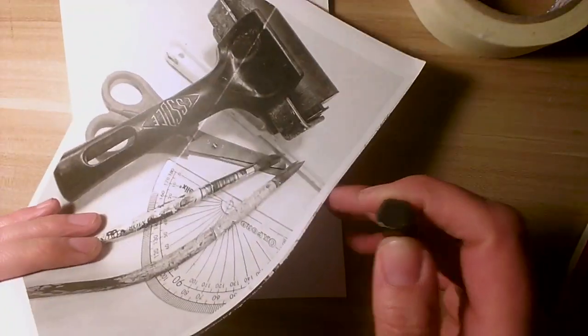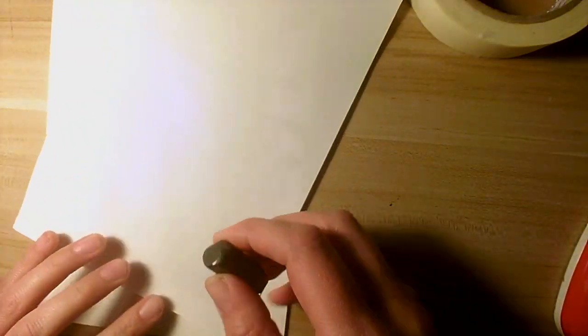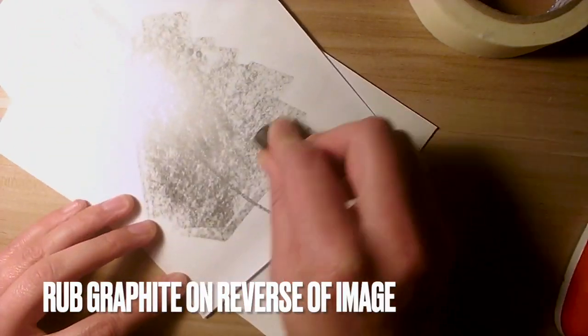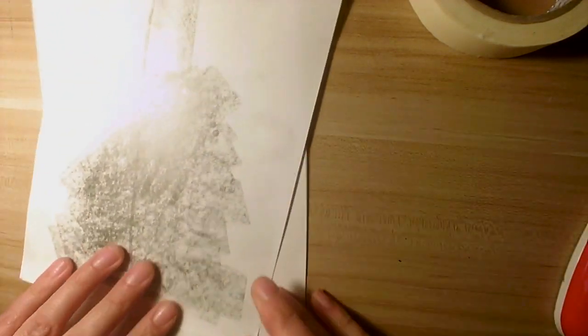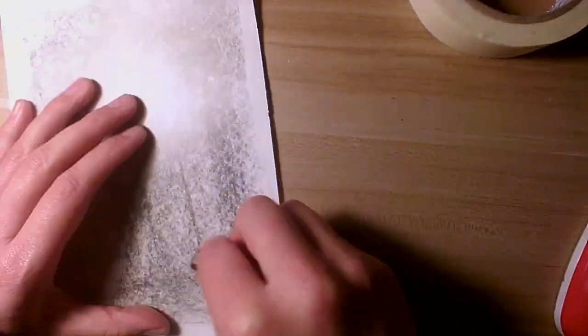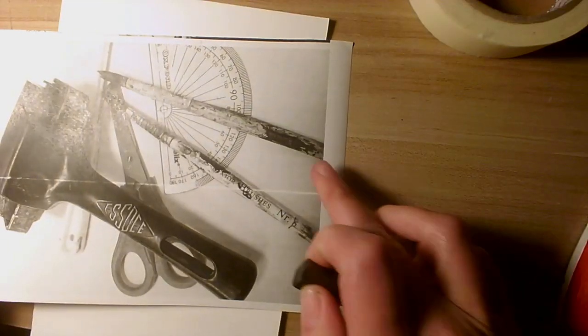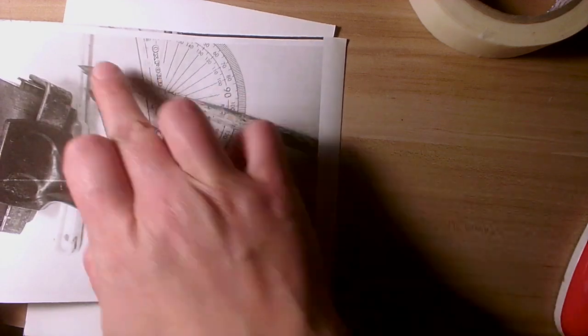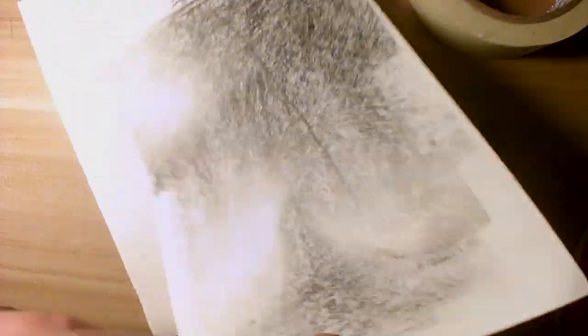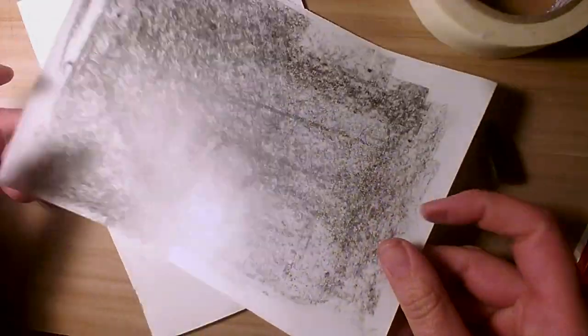So step one, turn over your image and rub the graphite all over the back. Make sure it covers every single bit and where necessary, right to the edges. Although there isn't much that comes to the edges but there and there. So make sure that's the edge. Okay, so you will have a sheet covered in graphite like that.